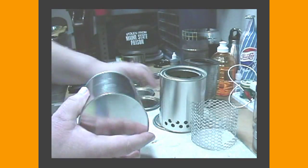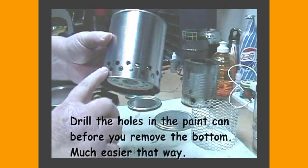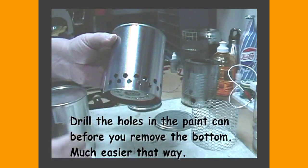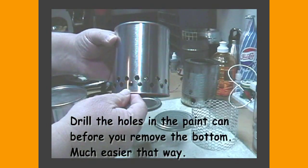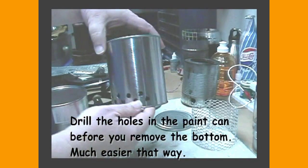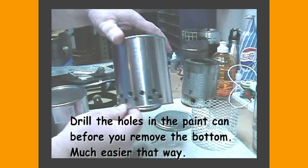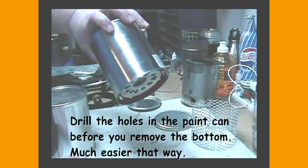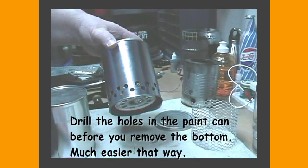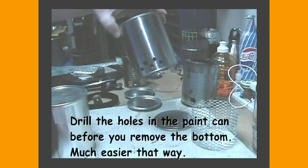With the paint can, now I put holes about on one half of the can, two layers of them. The reason for that is I can turn this into the wind, or I can regulate it any way I want to. If you put holes all the way around the bottom, you can have some complications there. So I just put them on half the can.